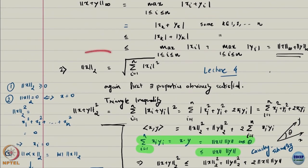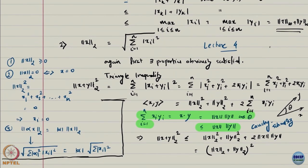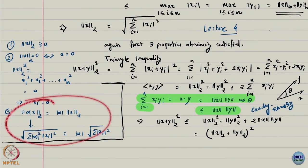What about the 2-norm? I will just look at the 2-norm, which is the most popular norm. The first three properties are very easy: non-negativity is obvious because we are squaring the terms. If the 2-norm is 0, then because nothing is negative, each term has to be 0, so it is a zero vector. Scalar multiplication is too simple to talk about.